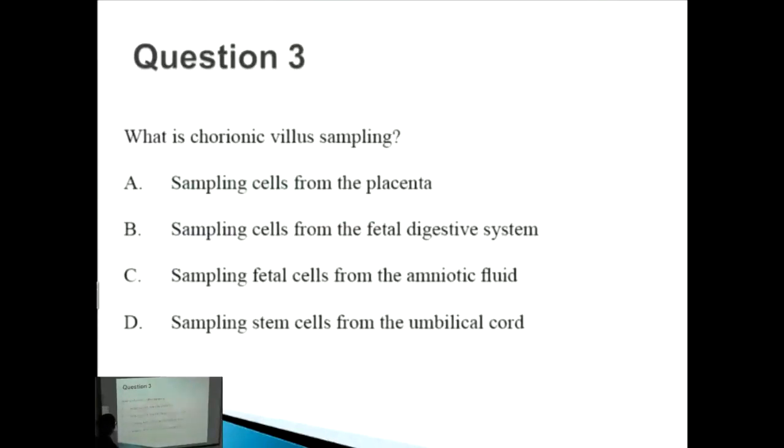Okay, so question 3. What is chorionic villus sampling? So chorionic villus sampling is one of the techniques that they use to test the DNA of babies before they're born. And you need to know that CVS, or chorionic villus sampling, is actually sampling from the placenta. So it's A, but we're going to go through B, C, and D as well.